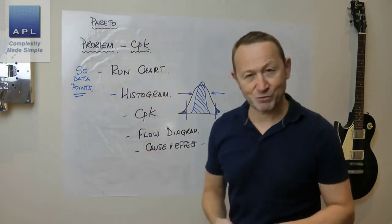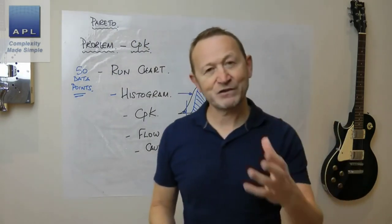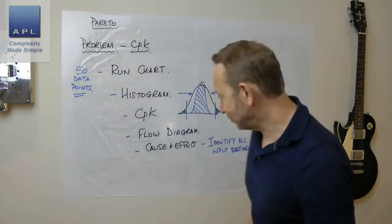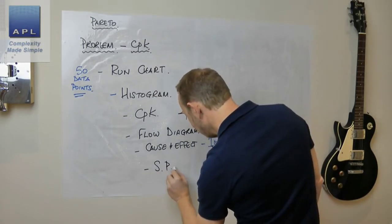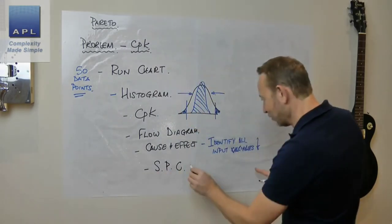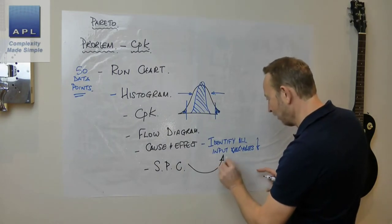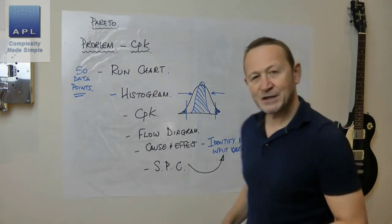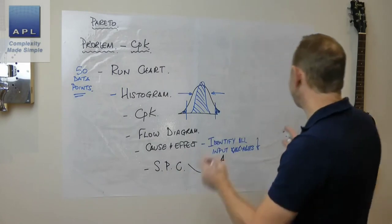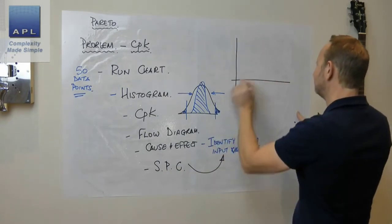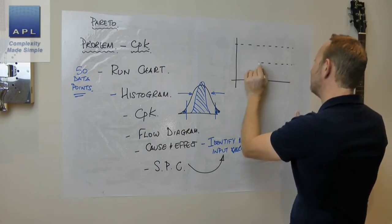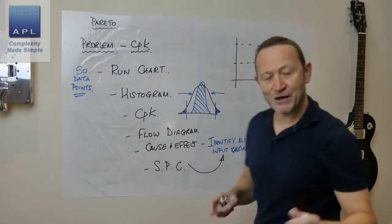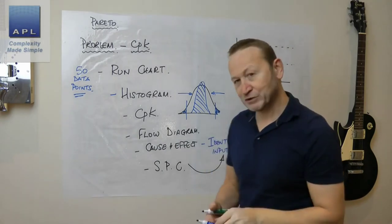There's the sixth one. Now the seventh quality tool: Statistical Process Control, SPC. Because once I've got the control plan, now I can add an SPC chart. Control limits - by the way, these are control limits, not specification limits. Most important.